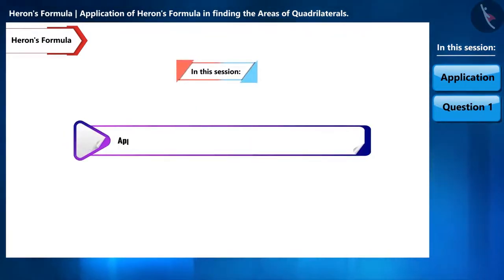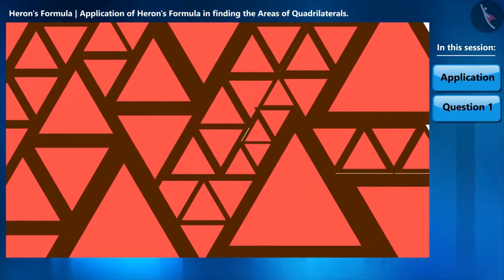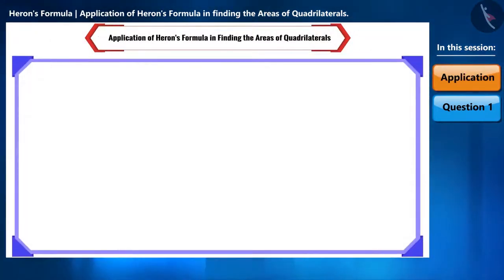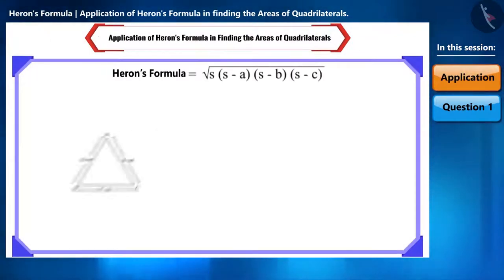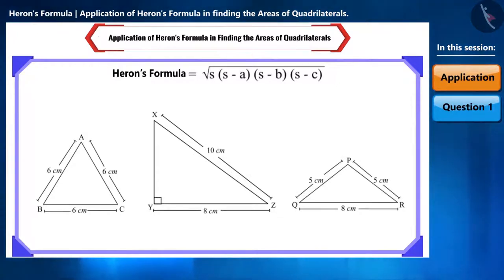Today, we will discuss the application of Heron's formula in finding the areas of quadrilaterals. So, let's start. Friends, using Heron's formula, we can find the area of any triangle when we know the length of all its three sides.